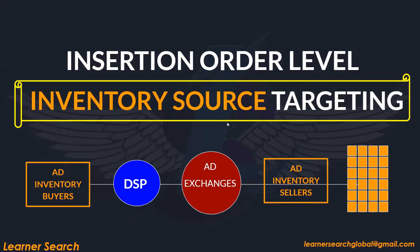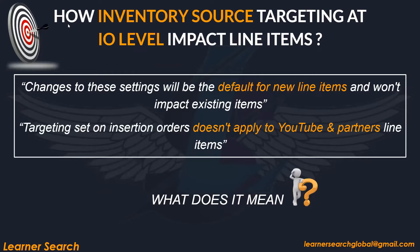Let's look at inventory source targeting and how it at the IO level impacts line items. We are only concerned about the level below — that is, line items. The key note here is: changes to these settings will be the default for new line items and won't impact existing ones. Targeting set on insertion orders also doesn't apply to YouTube and partner line items.